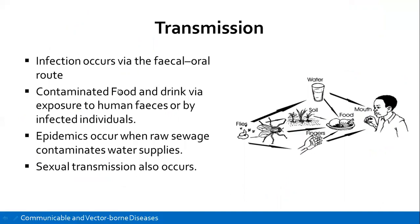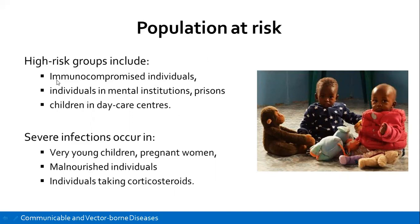Transmission is via the fecal-oral route through contaminated food and drink by exposure to human feces or by an infected individual. Large outbreaks will occur if raw sewage contaminates a water supply that people are consuming, causing an epidemic. Sexual transmission also occurs. Flies can carry it, and contaminated water and food can also cause transmission.